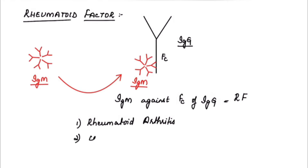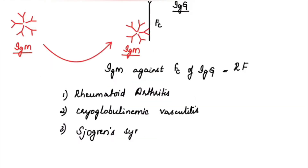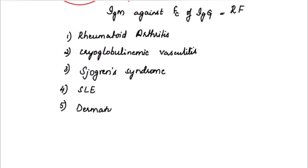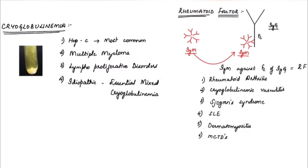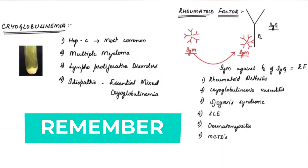Rheumatoid factor is seen with rheumatoid arthritis, cryoglobulinemic vasculitis, Sjögren's syndrome, systemic lupus erythematosus, dermatomyositis, and mixed connective tissue disorders. These are conditions where you can see a positive rheumatoid factor.